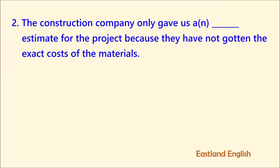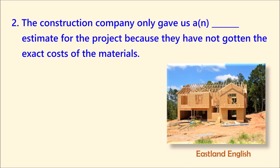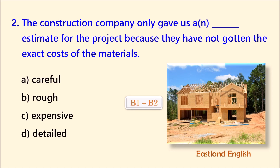Here is number two. The construction company only gave us a blank estimate for the project because they have not gotten the exact costs of the materials. A. Careful. B. Rough. C. Expensive. D. Detailed.